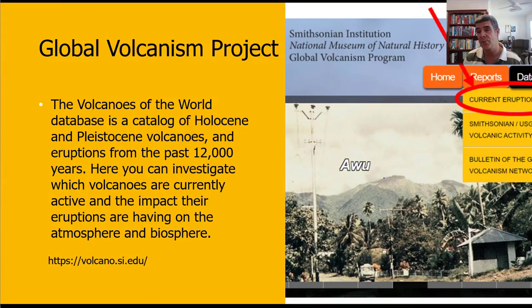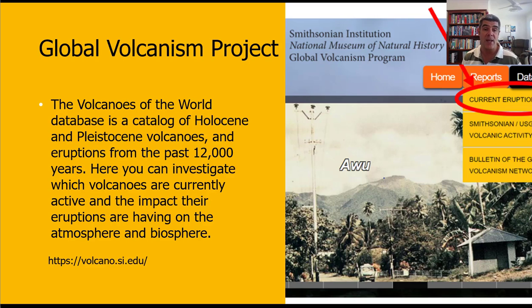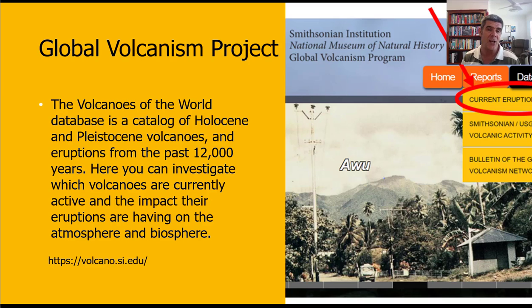One thing we're going to have a look at in class is the Global Volcanism Project — basically a website set up to track all current volcanic eruptions, everything that's actually erupting right now in real time. It gives pictures or videos and is historical as well, containing a lot of information on historical eruptions going back thousands of years, trying to build a picture of the regularity, occurrence, frequency, and distribution of different types of volcanoes around the world and the proportions that are currently active. We're going to have a little look at those in class to see what's going on in the world around us right now. Thanks for watching.